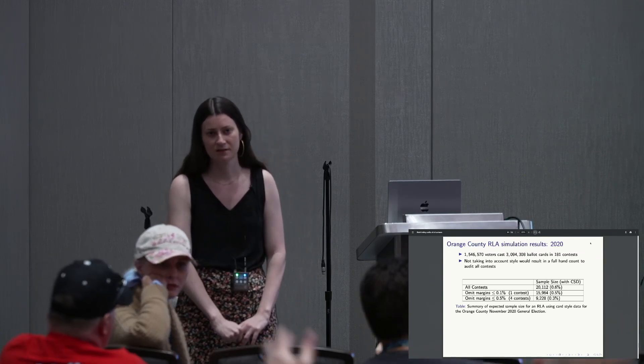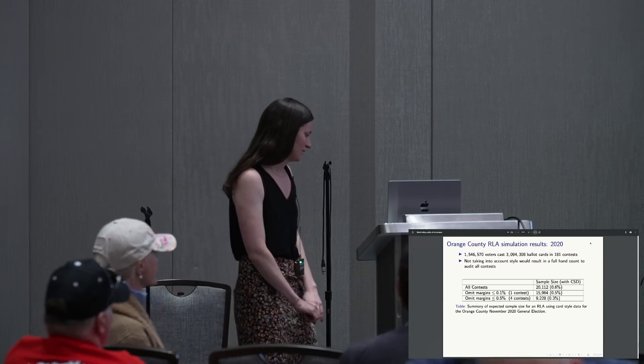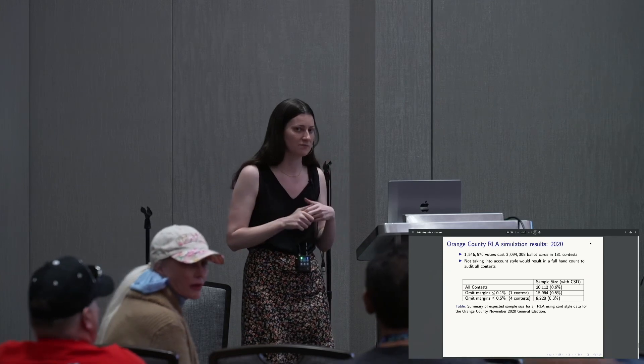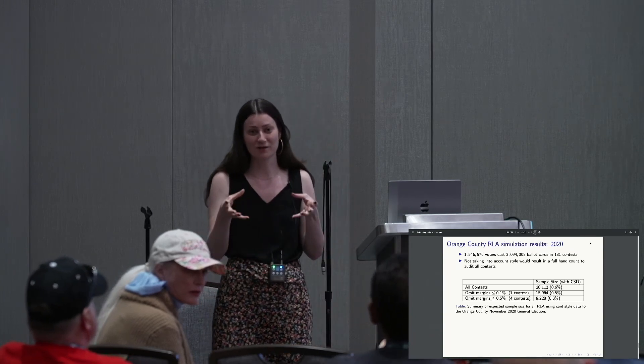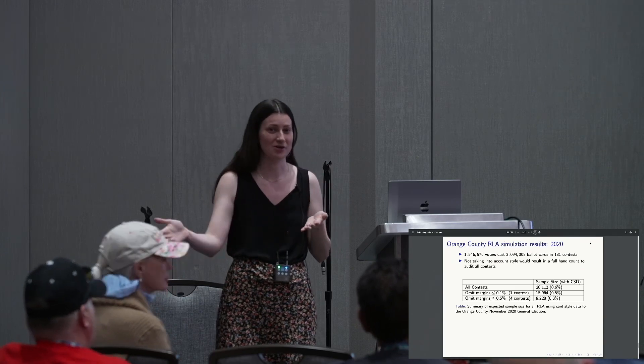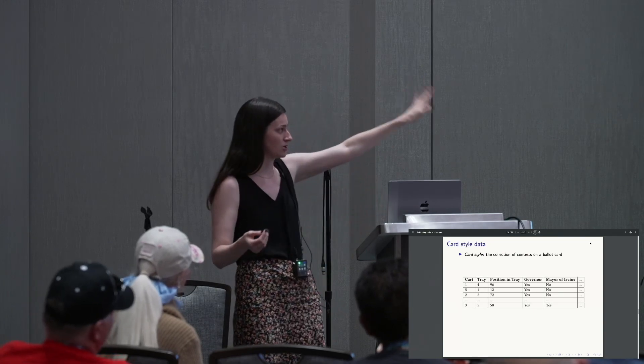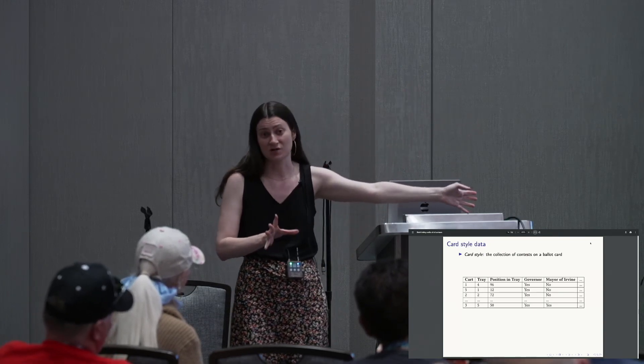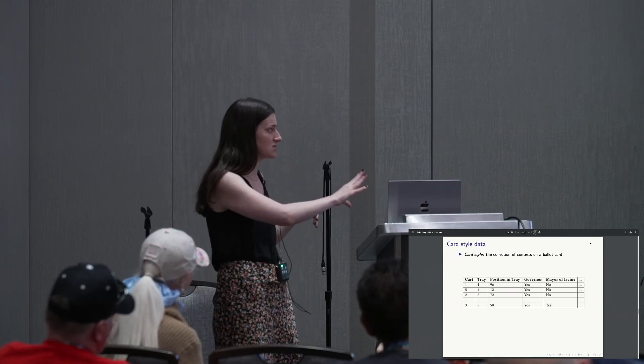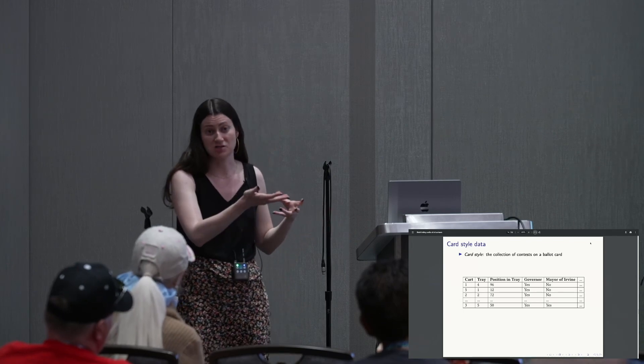Question: How often do they lay out ballots in a system like cart, tray, and position — is that a normal way they keep paper ballots? Answer: This becomes really essential when you're doing an RLA, because you need to know exactly where to go. There's a mix, but if you're doing an RLA, you have to have some sort of system — cart, tray, position in the tray — to know where to go. The exact details will vary, but to do an RLA, you'll have to know where to find each ballot.